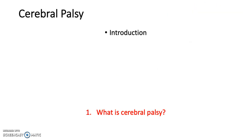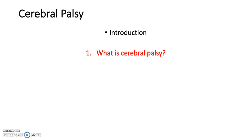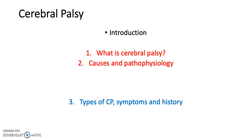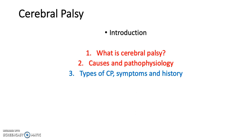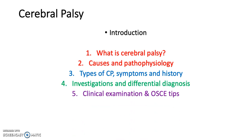So today we're going to be asking: what is cerebral palsy? We're going to be looking at the causes and the pathophysiology, the types of cerebral palsy and the symptoms and history those types may have, the investigations and differential diagnosis, the clinical examination and OSCE tips, and finally treatment — before we go back over the questions we just did to see whether you've learned anything today.